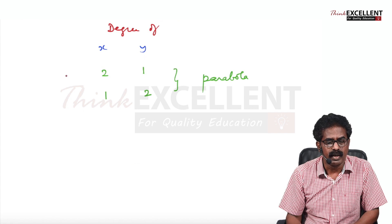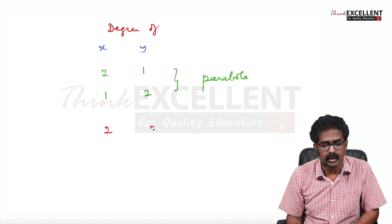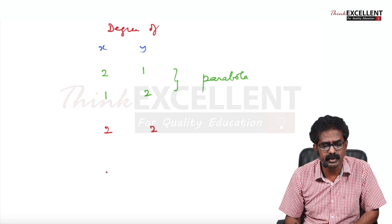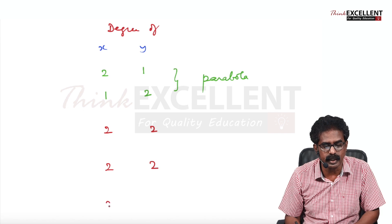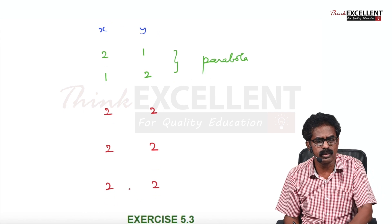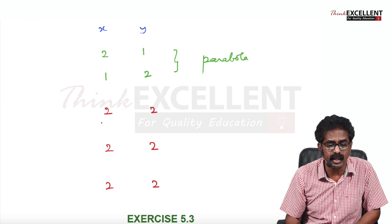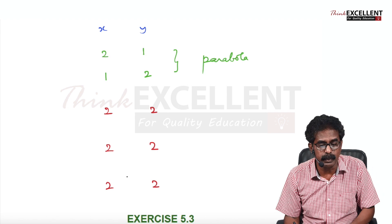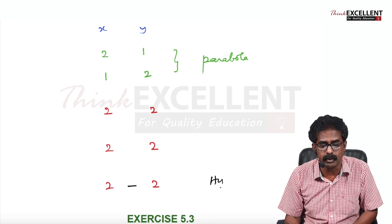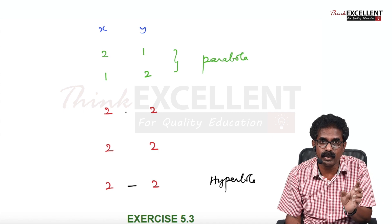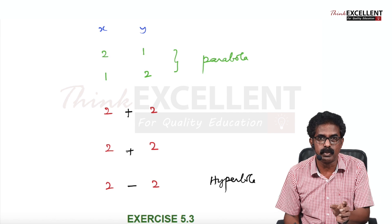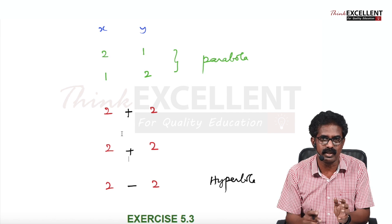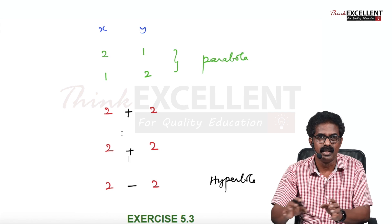So when degrees are (1,2) or (2,1), it represents a parabola. For ellipse, hyperbola, and circle, the degree is 2 for both X and Y. But then how to distinguish them? The sign between X² and Y²: if it is minus, then it is hyperbola. If the sign is plus, it may be ellipse or circle — don't add the degrees and write 4; this is about the sign between the terms.